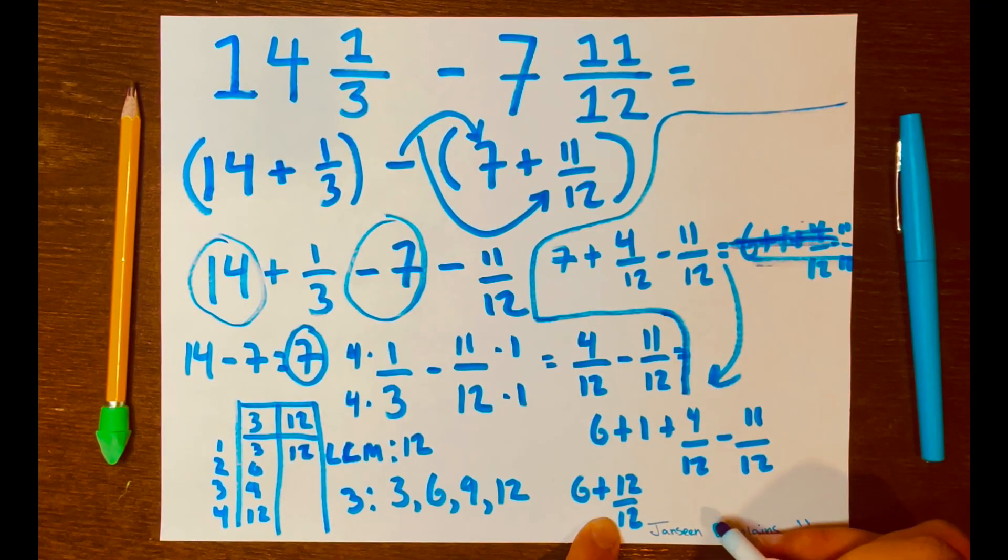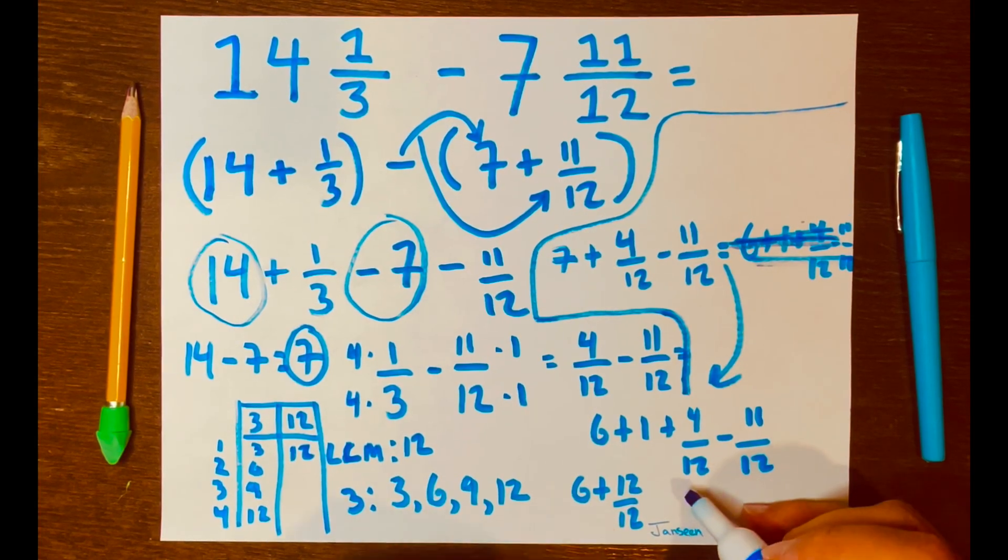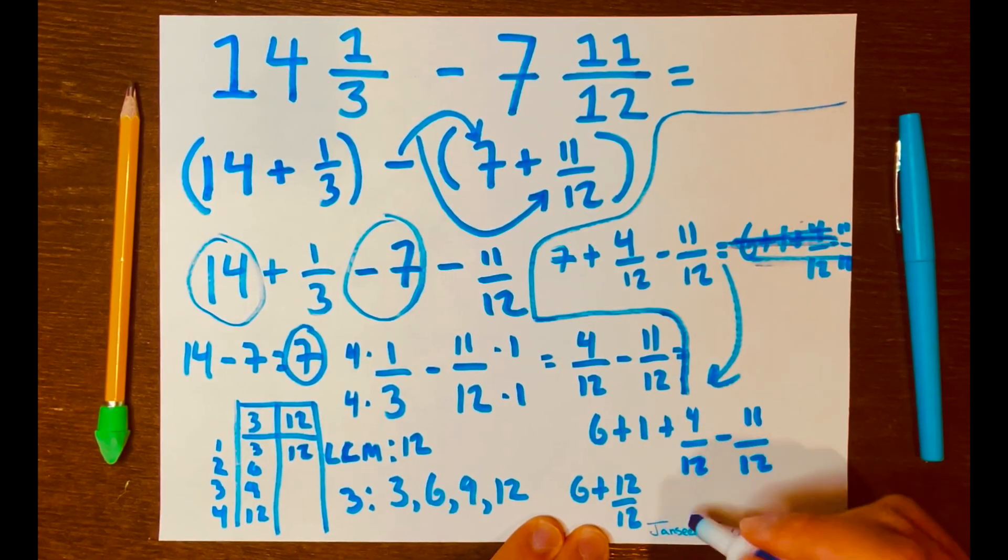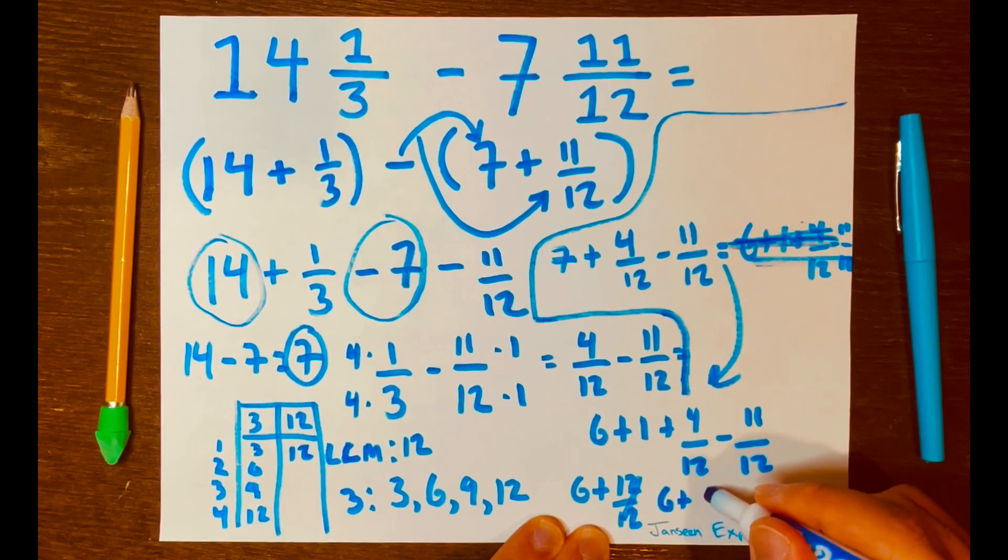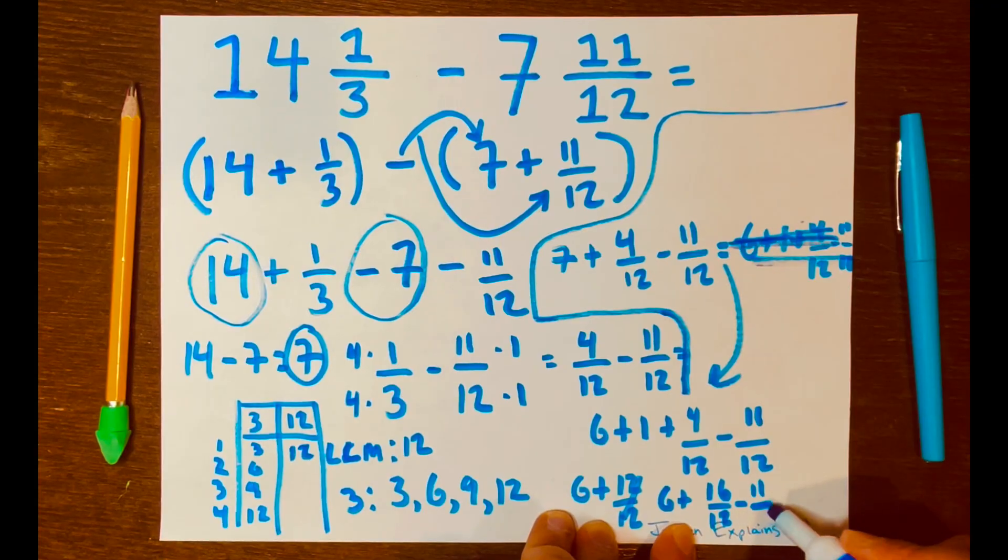And, now we'll give us, so 12 plus 4 is 13, 14, 15, 16 over 12. So, now this becomes 16 over 12, so it'll be 6 plus 16 over 12, minus 11 over 12.